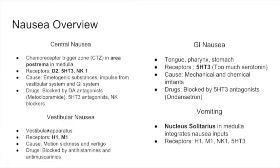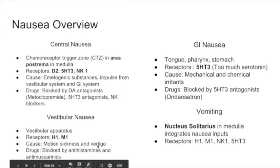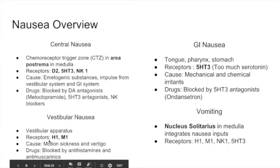Vestibular nausea comes from the vestibular apparatus, and this nausea is caused by motion sickness and vertigo — anything that rocks the vestibular apparatus. The receptors responsible for vestibular nausea are histamine receptors (H1) and the muscarinic receptor (M1). We can resolve vestibular nausea by giving antihistamines (anti-H1) and anti-muscarinics.